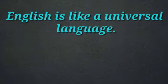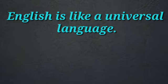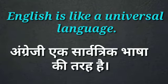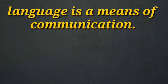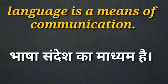Here the first sentence is: English is like a universal language. Angleji ek sarvatrik bhasha ki tara hai. Next is: language is a means of communication. Bhasha sandesh ka madhyam hai.